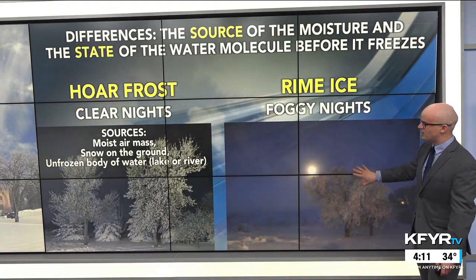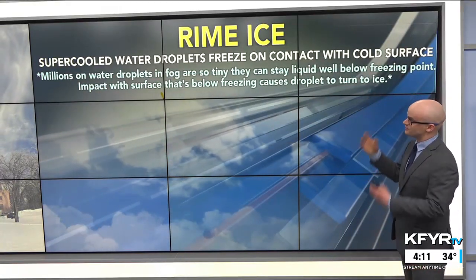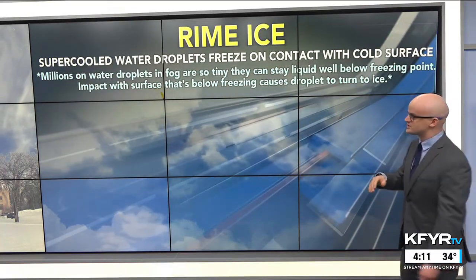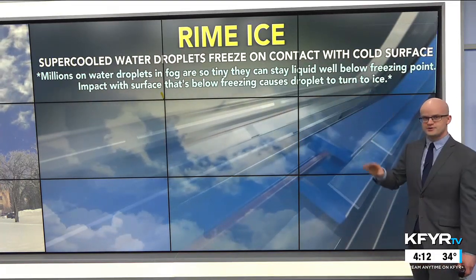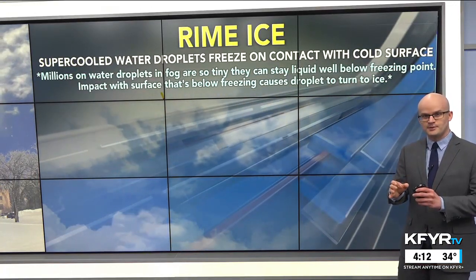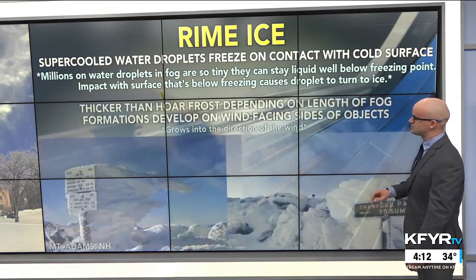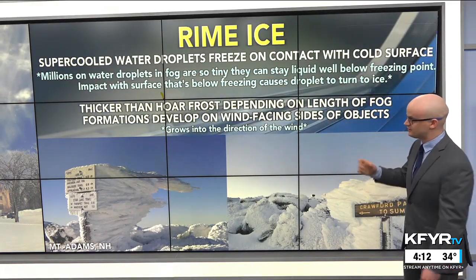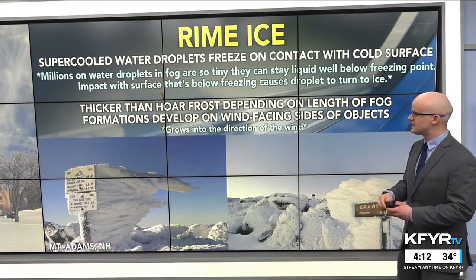Whereas with rime ice, we have that dense fog, and that translates to frozen ice crystals on objects. The supercooled water droplets freeze on contact with a cold, sub-freezing surface. These millions of water droplets in fog are so tiny they can stay liquid well below the freezing point — all the way down to minus 40 degrees in some cases — before they freeze. The impact with the below-freezing surface causes the droplets to turn into ice. Rime ice is usually thicker than hoarfrost, depending on the length of the fog.